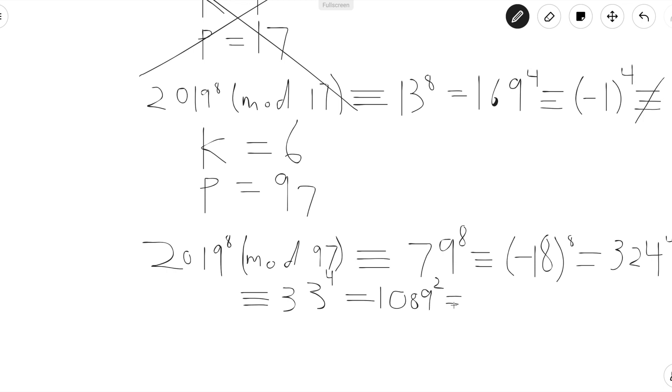So this is just congruent to 22 squared. And we can easily calculate that as 484. But if we divide this quickly, we see that 484 is indeed congruent to negative 1 mod 97. So that means that p equals 97 does work.